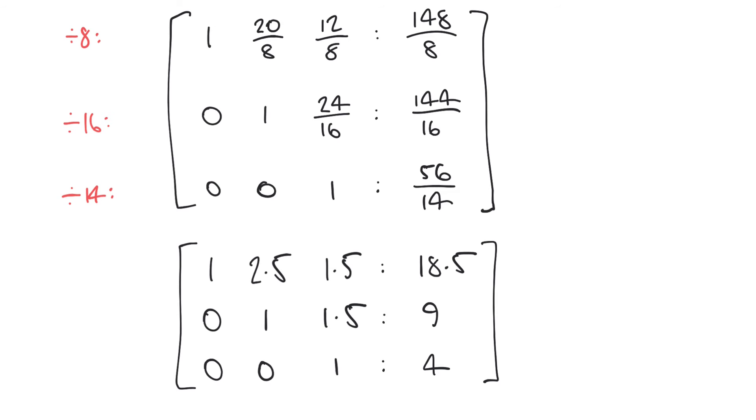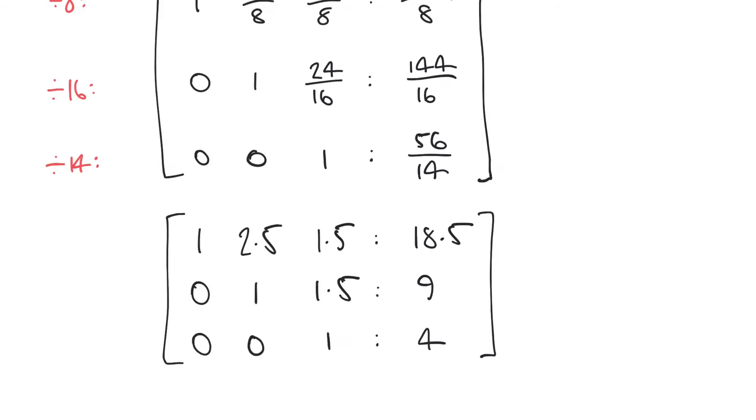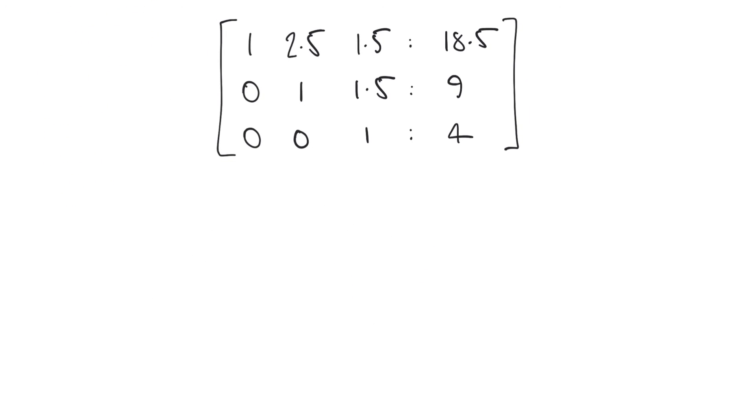So what we're going to do is we're going to convert all of these coefficients and results back into their original equation form. You remember at the start we started with some equations and we sort of transformed them into matrix form. We're going to transform them back and what we see is something like this. We have 1x plus 2.5y plus 1.5z equals 18.5.